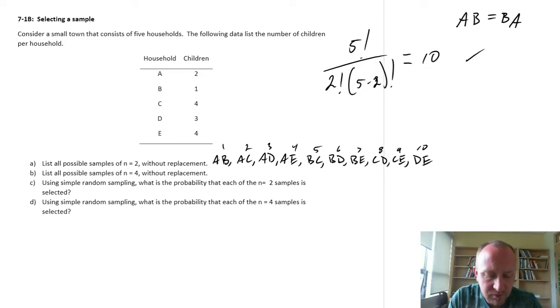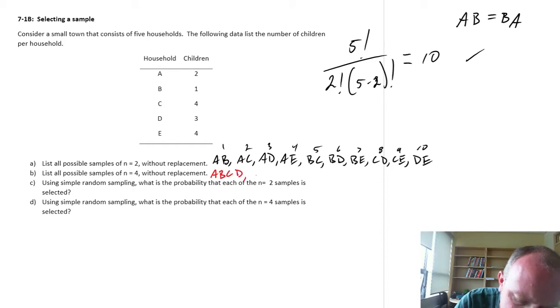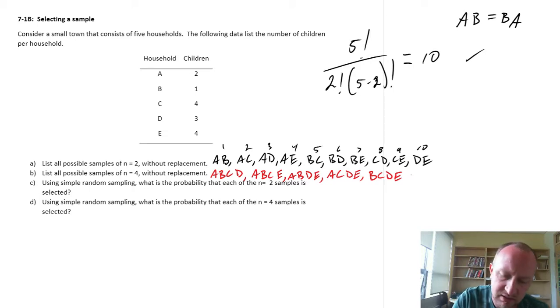Now the next one, possible samples of n equals 4. We'll use a similar process. I'm going to start with ABCD, ABCE, ABDE, ACDE, and finally BCDE. So here I have five different samples of size 4.